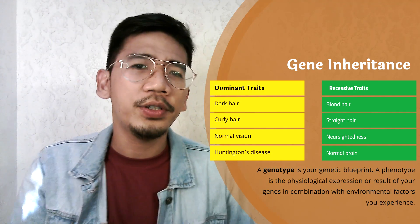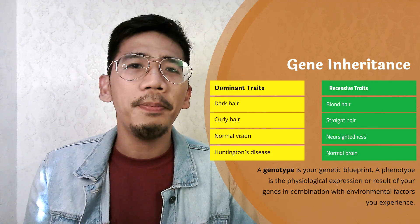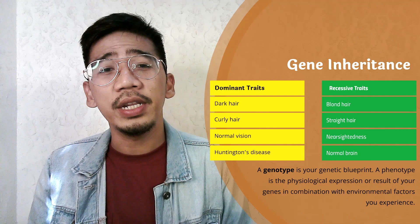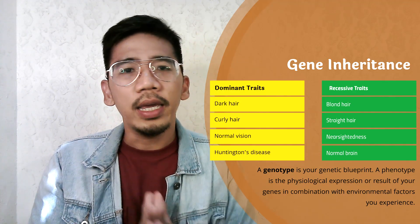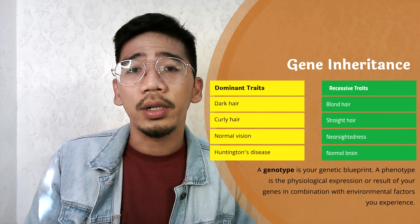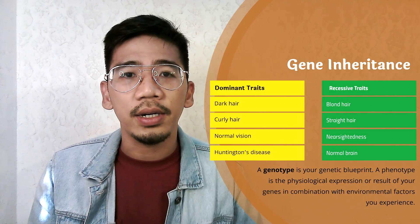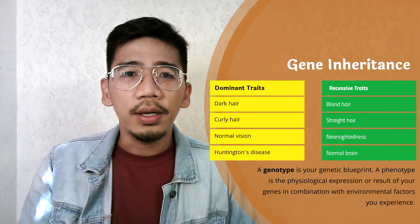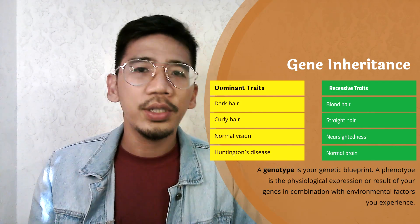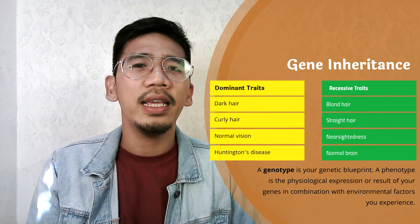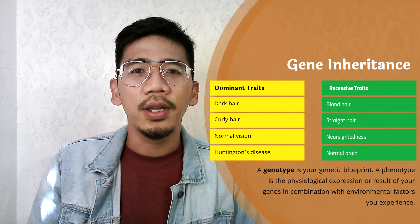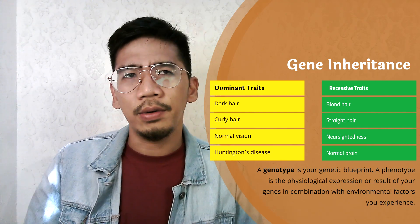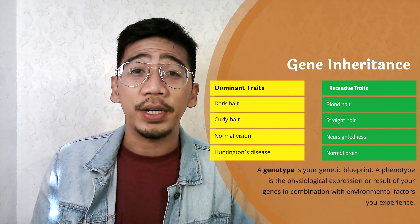Most human traits are influenced by many pairs of gene alleles, not just one set. Polygenic traits include height, weight, intelligence, skin color, susceptibility to cancer, and even temperament. Most personality traits are also of this type, with the result that a child is never exactly like his mother or father — more often, each of us inherits some of both of our parents' personalities.